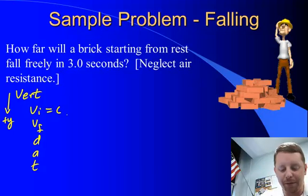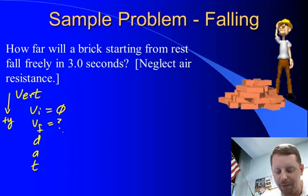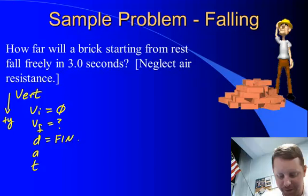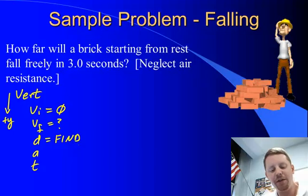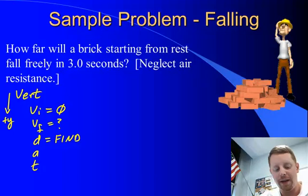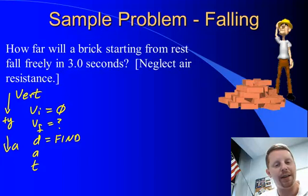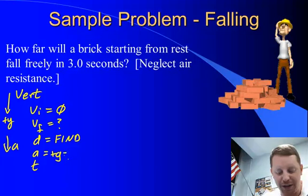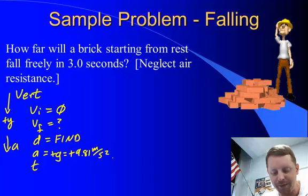Since it starts from rest, vi equals zero. We don't know vf in this problem — we're trying to find how far it falls. The acceleration, calling down the positive y direction with the object in free fall, is positive g or positive 9.81 meters per second squared. And the time is 3 seconds.